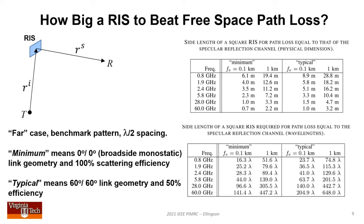In the top table, frequencies run from 800 megahertz to 60 gigahertz. Surfaces on the order of tens of meters are required. Required size generally decreases with frequency. The bottom table shows the same results in wavelengths. Sizes on the order of tens to hundreds of wavelengths are required. What might surprise is that required side length increases with the square root of frequency.